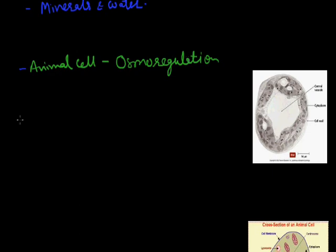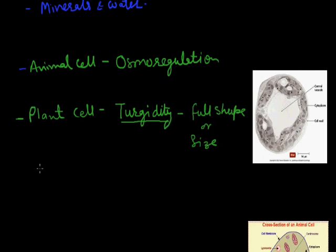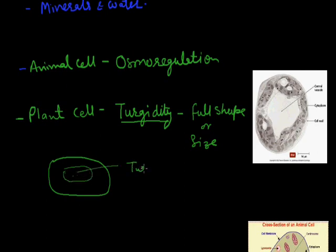In the case of plant cells, vacuoles are also responsible for maintaining the turgidity of cells. Turgidity means the shape of the cell is fully occupied at its full shape or size. The cell completely swells up or completely forms its structure due to the presence of water content or vacuole inside it. So this is the vacuole which is responsible for turgidity in the case of plants.